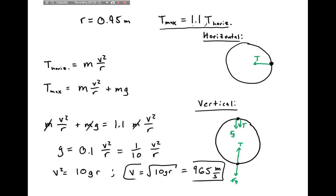So that's how fast this rock has to be whirled around so that, when swung in a vertical loop, the maximum tension exerted by the string is 10% larger than the tension when it was being whirled in a horizontal loop.